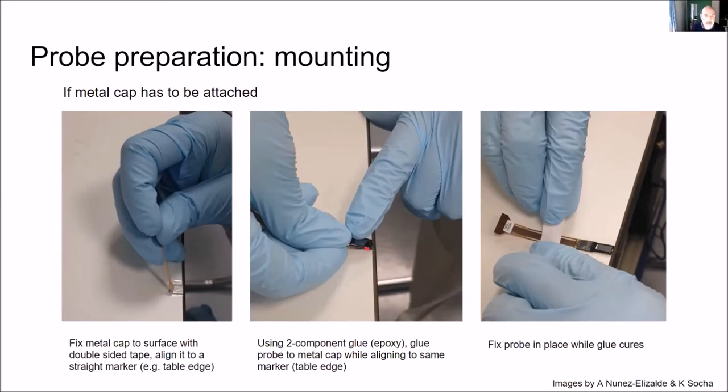Otherwise your shank will cut through the brain instead of going in smoothly along one dimension. One idea is that you fix the metal cap on the surface like this table and align it to a straight marker like this edge of the table. Then you can apply some glue on top of the metal cap, for example two-component glue like epoxy, and then you place your probe. The audio went funny. Can you do the second step again? After you have applied the epoxy, you just put on the probe and align it carefully to the same straight marker, for example this edge of the table.